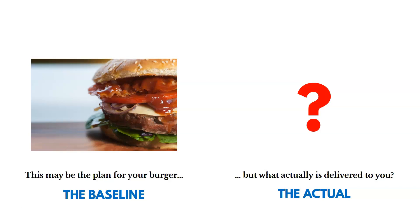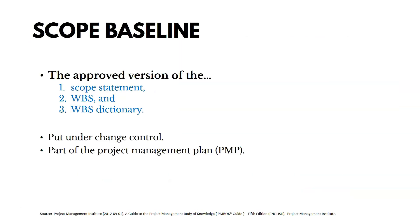The scope baseline is the key output of the Create WBS process and includes three things: the scope statement, the WBS, and the WBS dictionary. The WBS dictionary is basically a description of the items or work packages in the WBS. We're going to put the scope baseline under change control as part of the project management plan, which includes things that end in both 'plan' and 'baseline.'